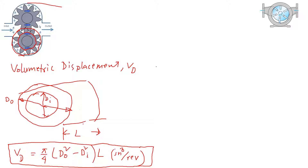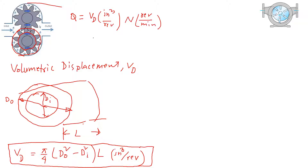If we want to calculate the flow rate Q, Vd is in inch cubed per revolution. If we multiply by N (RPM — revolutions per minute), we can have Q = Vd × N in inch cubed per minute.